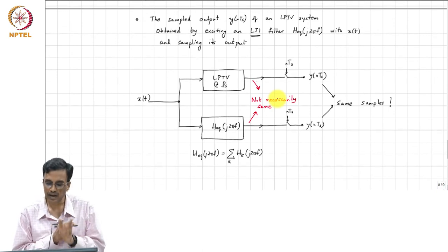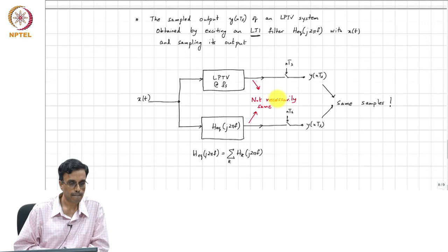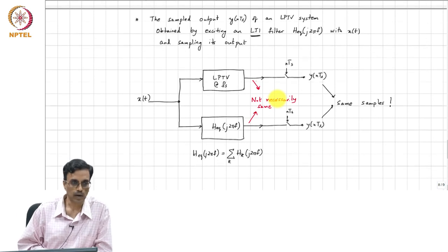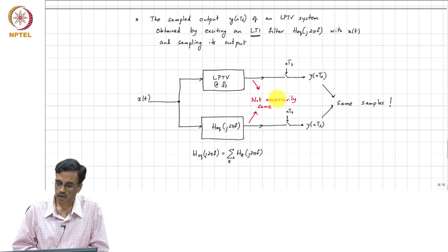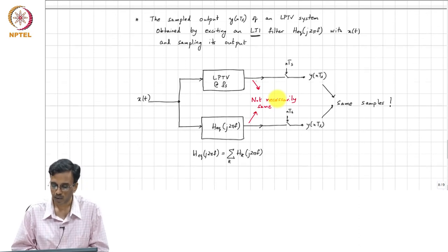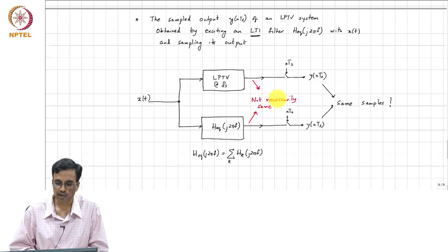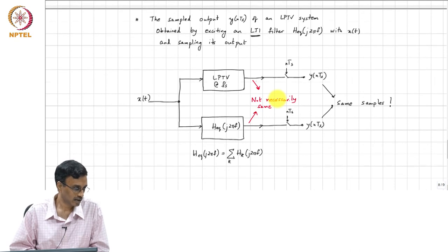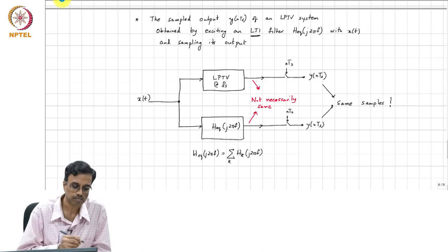But when you sample at n times T_s, you get the same samples. This makes life easy in many situations, particularly noise analysis, if you are interested only in samples. We will discuss this in the next class.